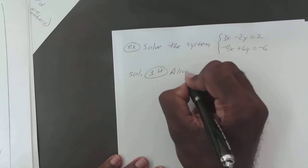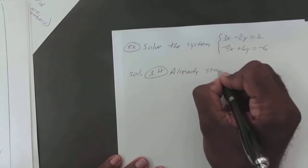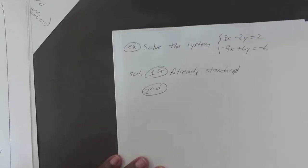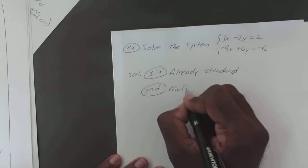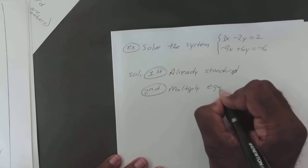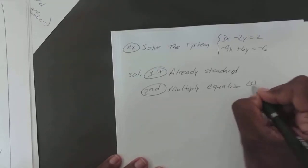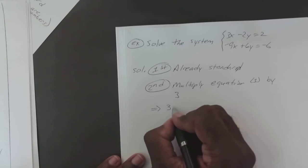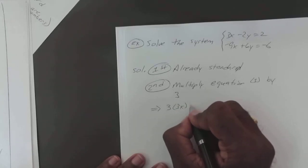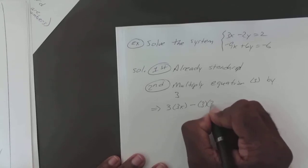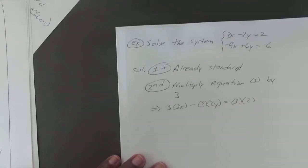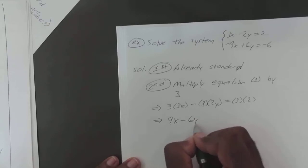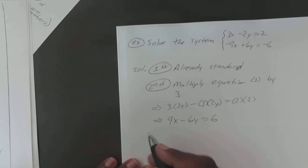Remember your first step—already in standard form. Second step, we're going to multiply the first one by positive 3. So that means we're going to end up with 3 times 3x minus 3 times 2y equals 3 times 2. So you have 9x minus 6y equals 6.